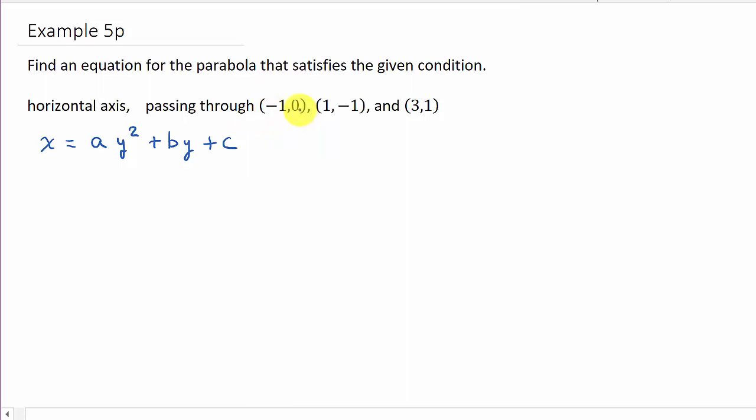So if we plug the 0 in for y, we get a times 0 squared plus b times 0 plus c is equal to this x value, which is negative 1. And so this right here gives us, well that all goes to 0, so we get c equals negative 1.